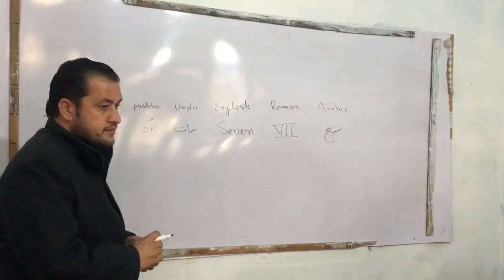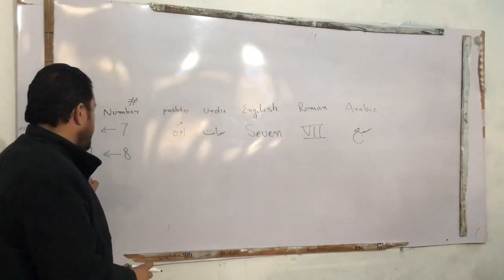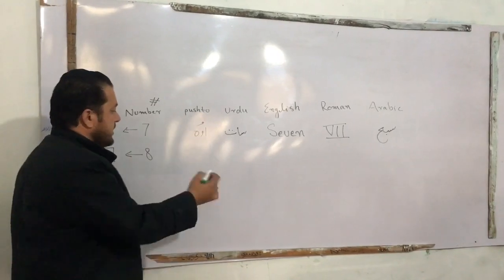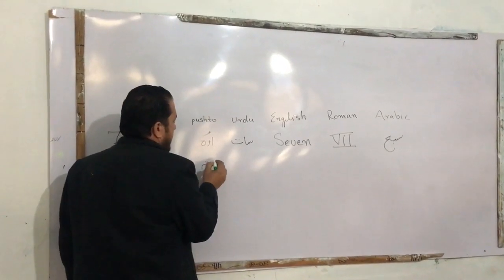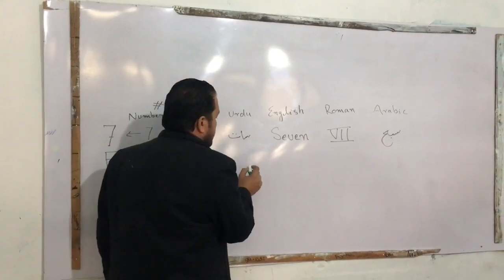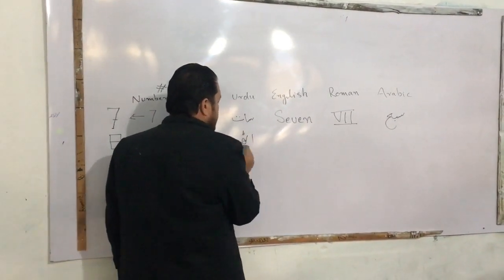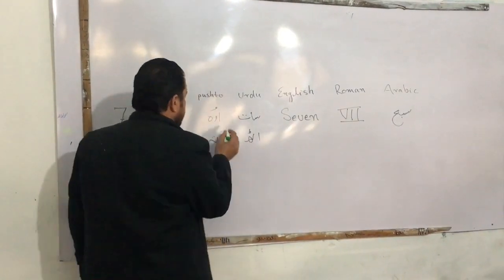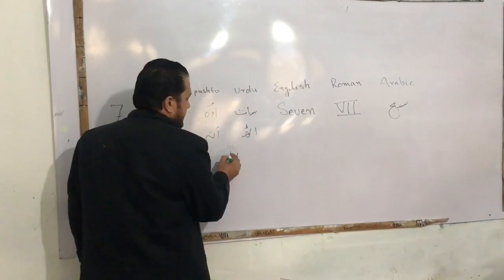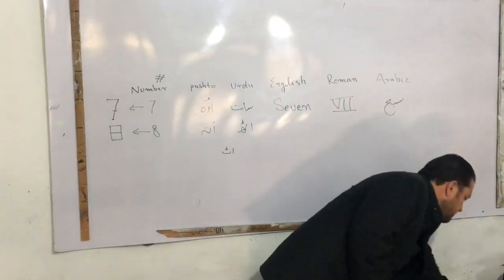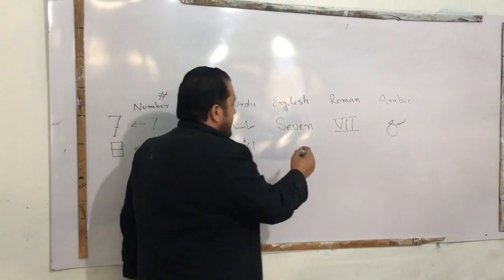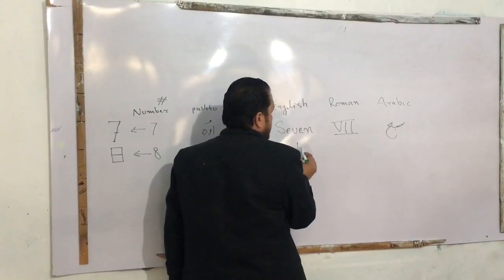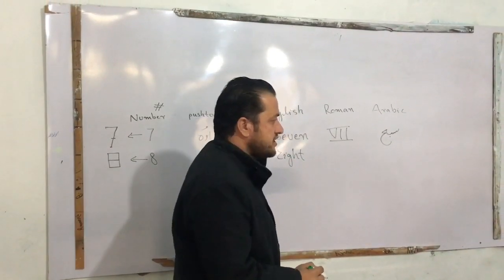We have our eight — ADT. ADT is the word 'eight.' A-T — at. E, I, G, H, T — 'eight.' A, I, G, H, T — at. Eight.